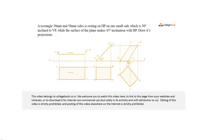A rectangle with 30 mm and 50 mm sides is resting on a horizontal plane on one small side, which is 30 degrees inclined to the vertical plane, while the surface of the plane makes 45 degrees inclination with the horizontal plane. Draw its projections.